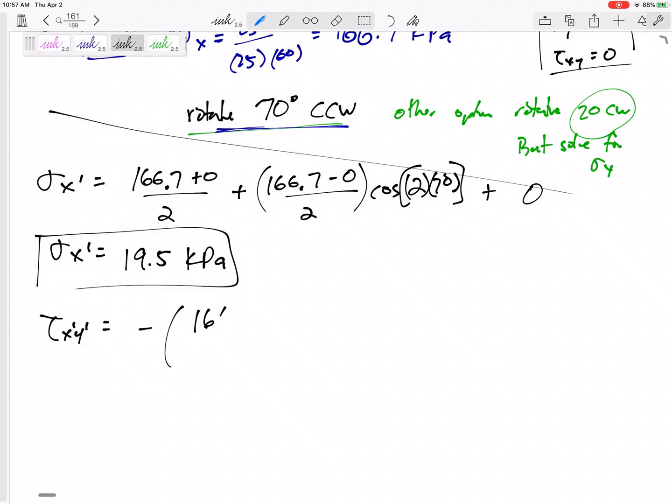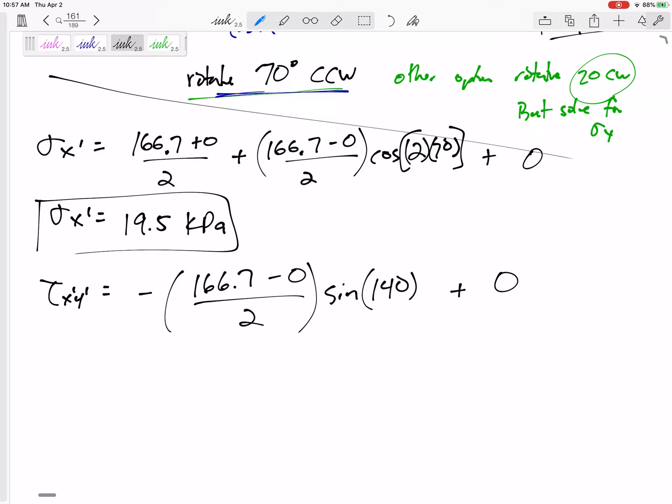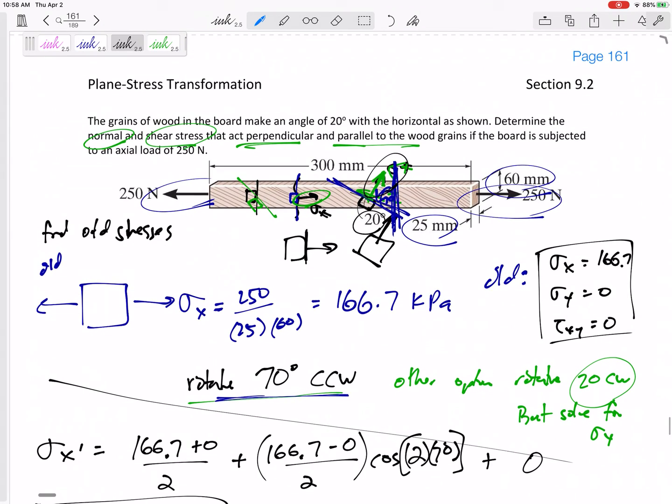That formula: negative sigma X minus sigma Y divided by 2, sine 2 theta, plus tau XY cosine 2 theta. So negative sigma X minus sigma Y divided by 2, sine of 2 theta, so sine of 140, plus tau XY. My old tau XY is 0. So this new tau X prime Y prime will be negative 53.6 kPa. Negative 53.6 kPa.